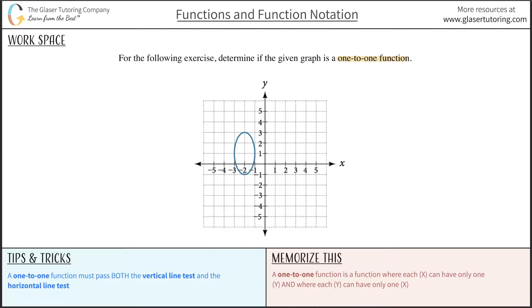All right, so you definitely just want to understand what a one-to-one function is, and I have a basic definition down here, that a one-to-one function is a function where each x can have only one y. Now that should sound familiar. That part is actually the definition of a function, where each x can have only one y.